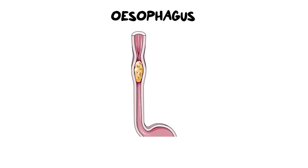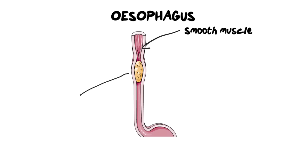Now that we've chewed the food and made it smaller and easier to swallow, we need to move it down the esophagus. The esophagus is made out of smooth muscle, and smooth muscle moves involuntarily — it doesn't need to be told to do that. What it's doing is moving the bolus of food down the esophagus in a wave-like contraction called peristalsis.